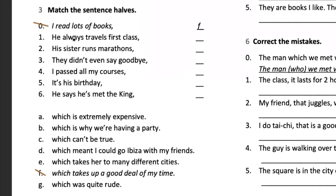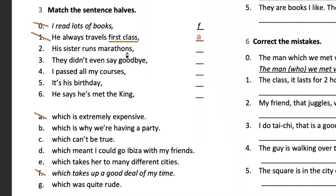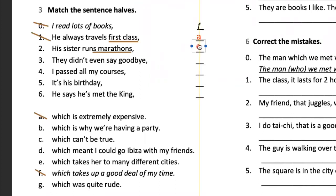'He always travels first class, which is extremely expensive' — on an airplane, right. So that's the reason we connect with A. 'His sister runs marathons, which takes up to many different cities.' If you run a marathon, maybe one day you run in San Isidro, another day you go to Marcawasi — different locations. 'They didn't even say goodbye, which was quite rude.' 'I passed all my courses, which is why we're having a party.'